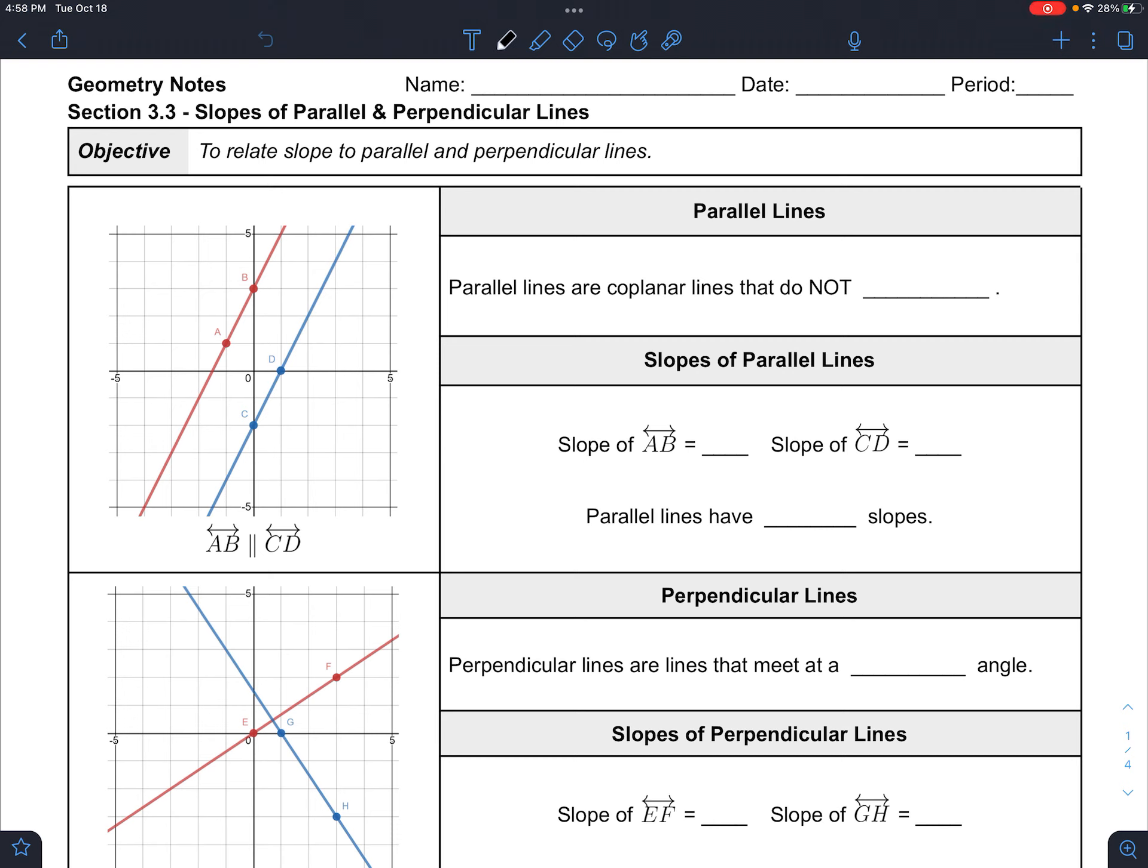So remember, parallel lines are coplanar, meaning that they both, in this case, they both rest in the x-y plane, they're flat, and they do not intersect.